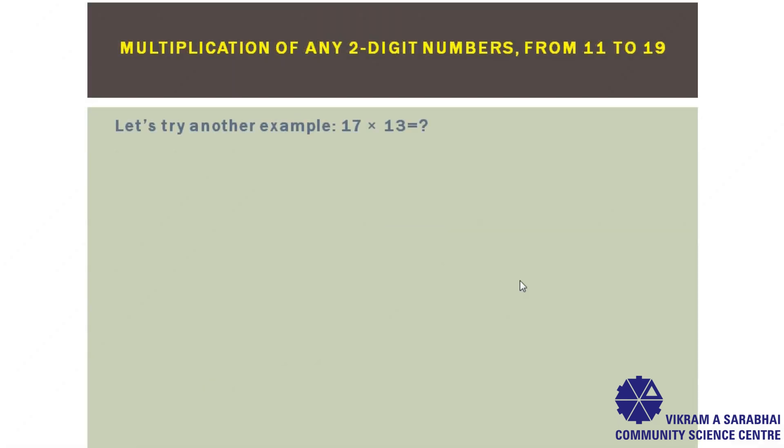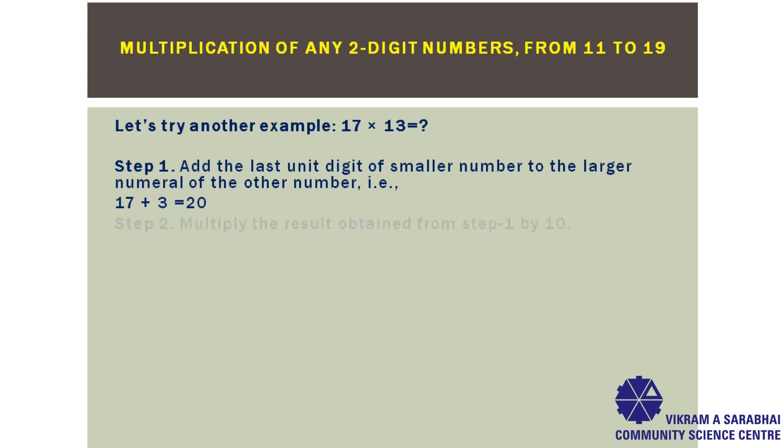Let's try another example. What you will get when you multiply 17 with 13? Step 1: Add the last unit digit of smaller number to the larger numeral. The larger numeral here 17 and the last unit digit of smaller number is 3. So, 17 plus 3 will get 20.